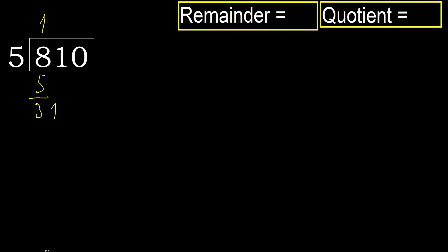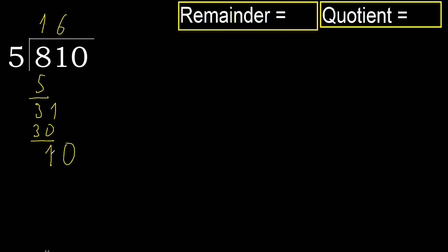Bring down 1, making 31. 5 multiplied by 7 is 35, which is greater. 5 multiplied by 6 is 30, which is not greater. Ok, subtract: 31 minus 30 equals 1. Next, bring down 0, making 10.